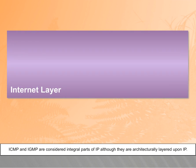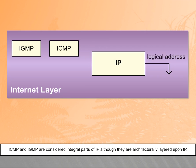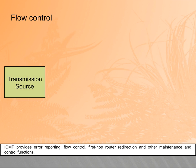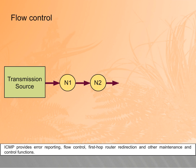ICMP and IGMP are considered integral parts of IP, although they are architecturally layered upon IP. ICMP provides error reporting, flow control, first-hop router redirection, and other maintenance and control functions.